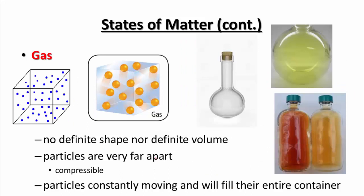Our last state of matter is gases. Gases do not have any definite shape nor definite volume — their shape and volume is exactly what their container is. So if the container is 5 liters, the gas occupies 5 liters and takes the shape of that container. No definite shape, no definite volume. The particles are very far apart, which means you can compress them — if you exert an outside force, you can cause those gas particles to squish closer together. So they are compressible.